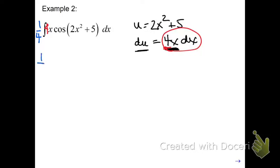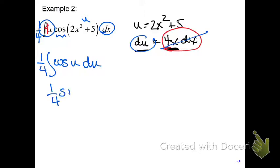So I bring down the 1/4, and I have the integral of the 4x and the dx together get replaced with du. And this is the cosine of u. And now you can integrate it. So you bring down the 1/4, integral of cosine is sine of u, and then change u back into what it was. And that's it.